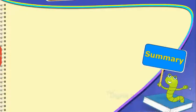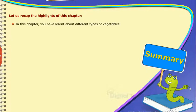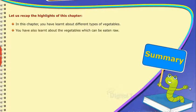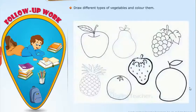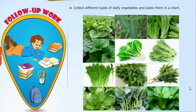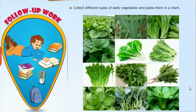Summary: Let us recap the highlights of this chapter. In this chapter, you have learned about different types of vegetables. You have also learned about the vegetables which can be eaten raw. Let us take up the following activity: Draw different types of vegetables and colour them. Collect different types of leafy vegetables and paste them in a chart.